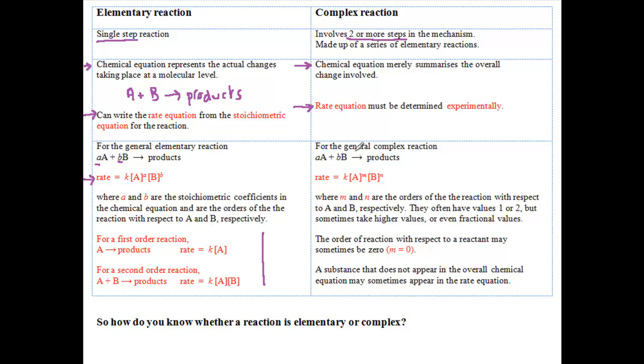For the general complex reactions shown here, the rate equation takes this form, where M and N are the orders of the reaction with respect to A and B respectively. Note that the stoichiometric coefficients in the equation A and B don't appear in the rate equation.